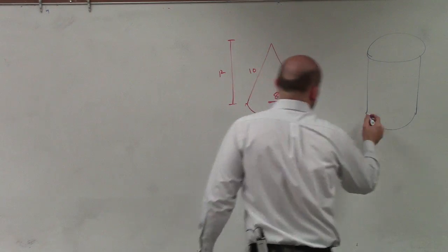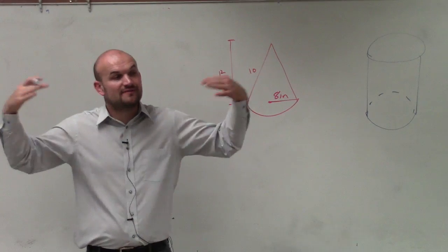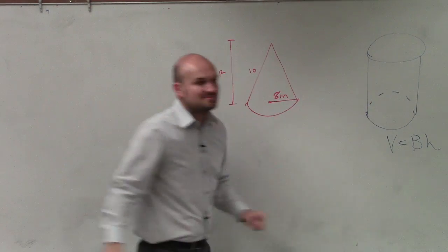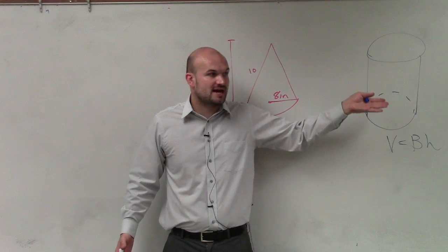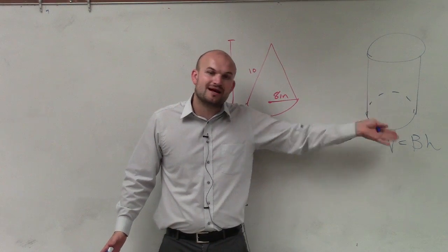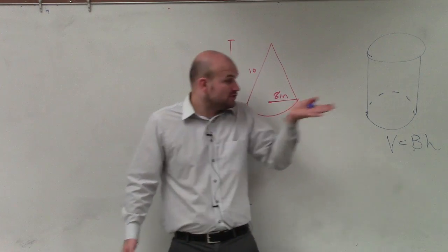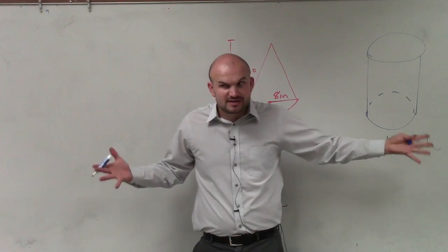But what's so important about this is to find the volume of a prism, it was a very basic formula: base times height, where B represented the base. So whatever your base was, if it was a rectangle, square, pentagon, or triangle, whatever it was, you found the area of the base and multiplied by the height. It was very simple.